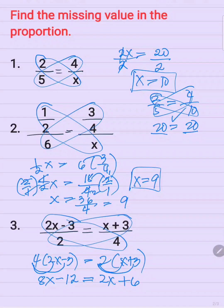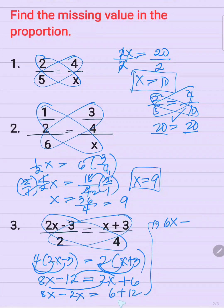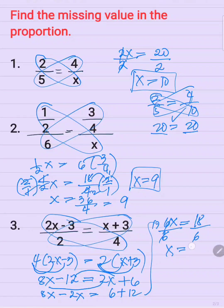So now you need to isolate x. We can move terms to the other side of the equation. So 8x minus 2x — using the transposition method, move negative 12 to the other side, it becomes positive 12. 8x minus 2x is equal to 6x, and 6 plus 12 is equal to 18. Dividing both sides by 6, x is equal to 3.